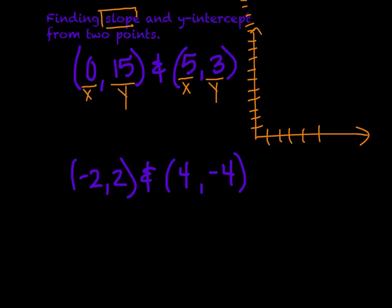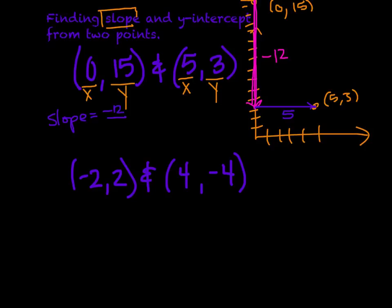And actually graph them. So we have 0, 15 up here. I can't quite do it. 0, 15. And we have 5, 3. And then we'd be looking at the rise over the run of this situation. So we're going to be looking at how far did we go up or down. So we can look at how far we went down from the y-intercept. We went from 15 to 3, so that's down 12 units. And then how far did we go over? We went from 0 to 5, which is 5 units.